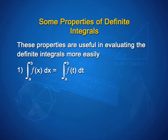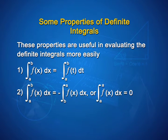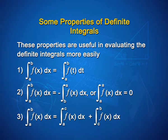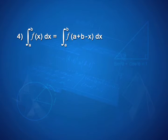Let us look into some properties of definite integrals, which are useful in evaluating them more easily. Property 1: integral from a to b of f(x) dx = integral from a to b of f(t) dt. Property 2: integral from a to b of f(x) dx = −integral from b to a of f(x) dx, or integral from a to a of f(x) dx = 0. Property 3: integral from a to b of f(x) dx = integral from a to c of f(x) dx + integral from c to b of f(x) dx. Property 4: integral from a to b of f(x) dx = integral from a to b of f(a + b − x) dx.